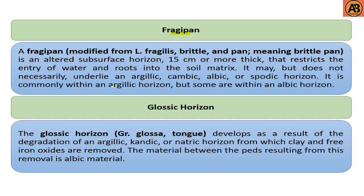The next one is the fragipan. Fragipan — modified from fragile and pan meaning brittle pan — is an altered subsurface horizon 15 centimeters or more thick that restricts the entry of water and roots into the soil matrix. It may but does not necessarily underlie an argillic, cambic, albic, or spodic horizon. It is commonly within an argillic horizon, but some are within an albic horizon.